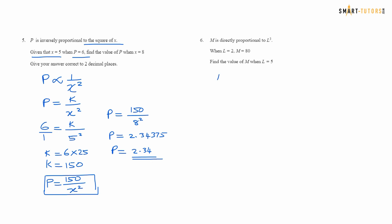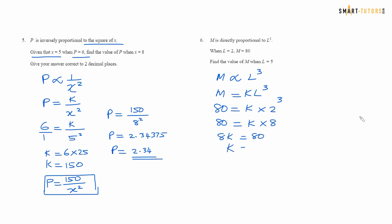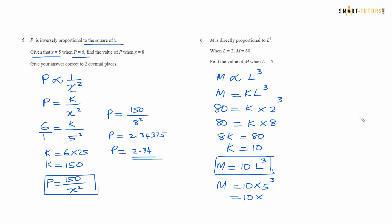Question number 6: M is directly proportional to L cubed. So M equals k L cubed. Given L equals 2 and M equals 80: 80 equals k times 2 cubed, which is 8. So 8k equals 80, giving k equals 10. The equation is M equals 10 L cubed. Find the value of M when L equals 5: M equals 10 times 5 cubed. 5 cubed is 125. So M equals 1250. That is the answer for question number 6.